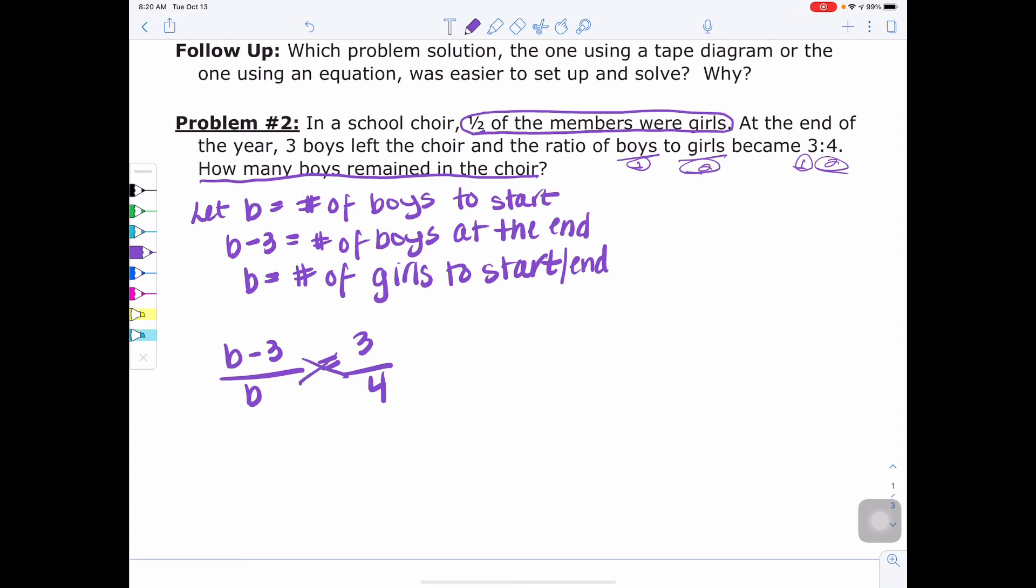So now we're going to cross multiply. And we have three times B. And on the other side, we have four times B minus three. So we'll go through our steps. We have distributive property. So we have three B equals four times B is four B. Four times negative three is negative 12. Then this is an equation that I like to call lopsided. It doesn't make sense to move the three B because then everything will be on the right and nothing on the left. So we're going to get rid of the four B since it's the side with more stuff. And this is negative B equals negative 12. That means there's really a negative one in front of that B. So we would divide both sides by negative one and get that B is 12.